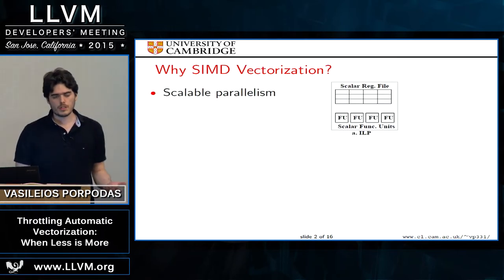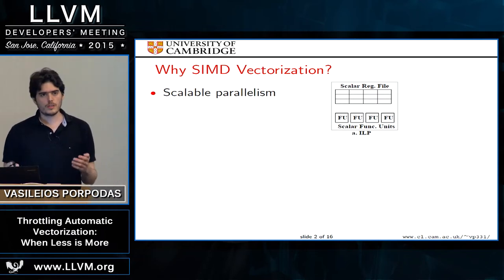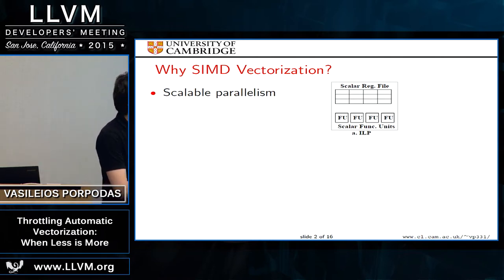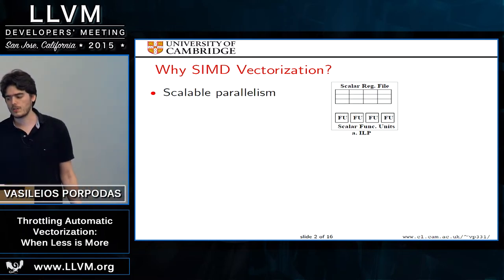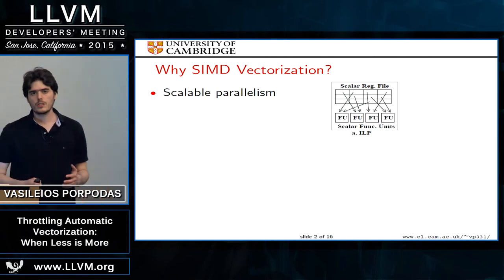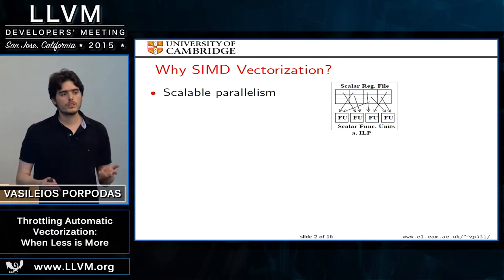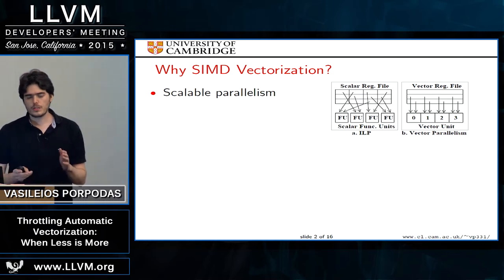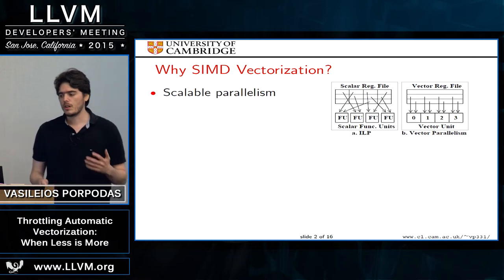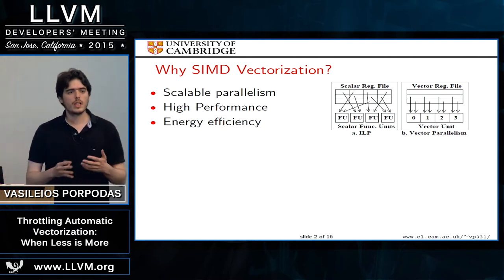Why do we care about SIMD vectorization? Vector parallelism is a scalable form of parallelism. As opposed to instruction-level parallelism, you can get a much wider vector processor. In an ILP processor, functional units access a shared register file randomly, but in a vector processor, each vector lane can only access a specific part — the accesses are aligned — guaranteeing simpler hardware, higher performance, better energy efficiency, and scalability to larger sizes.